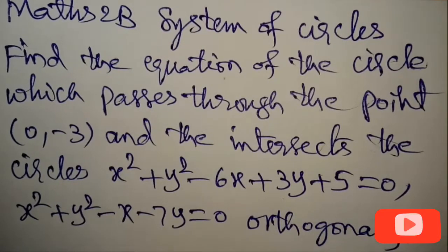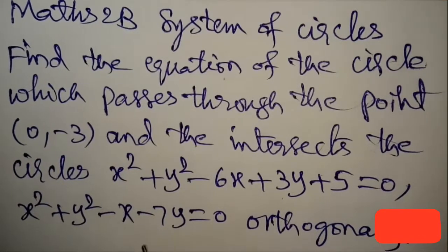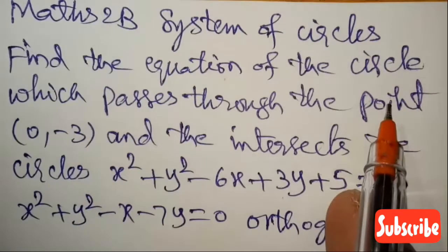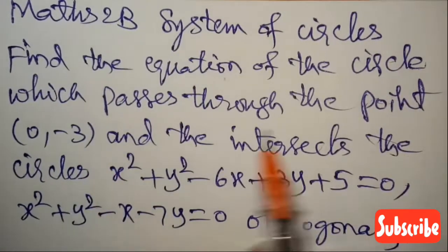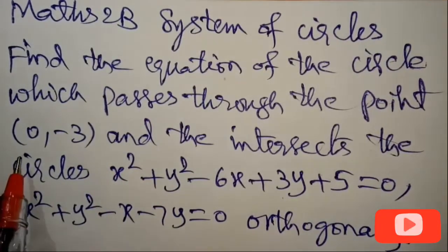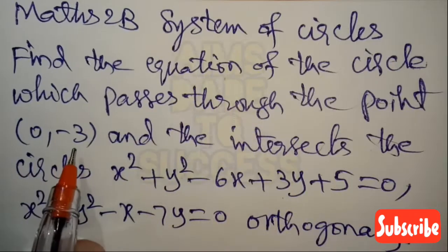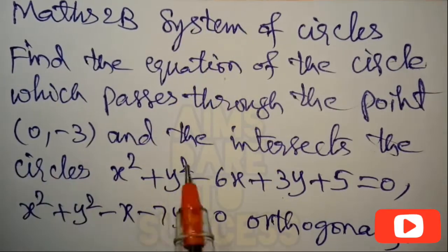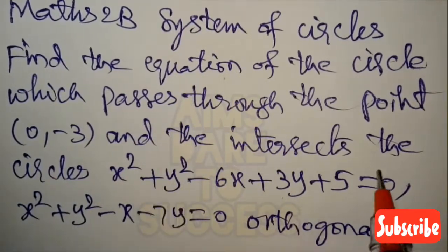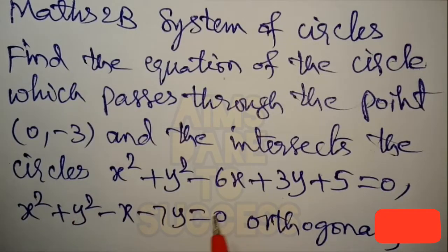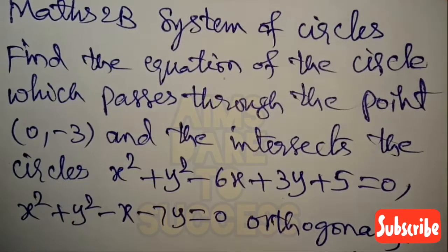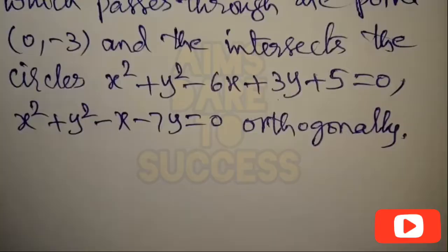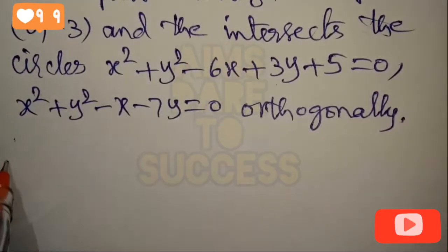Mass 2b system of circles: find the equation of the circle which passes through the point (0, -3) and intersects the circles x² + y² - 6x + 3y + 5 = 0 and x² + y² - x - 7y = 0 orthogonally.